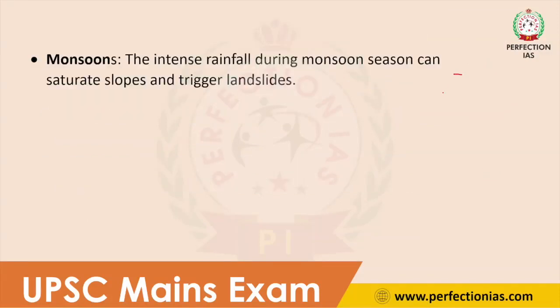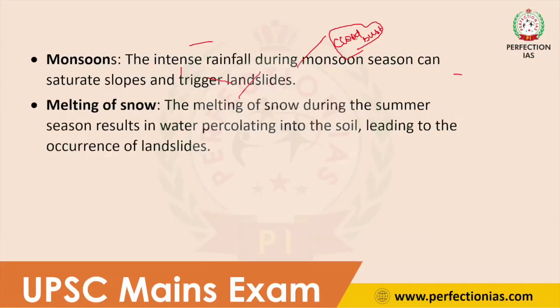The next cause is monsoon. The intense rainfall during monsoon season can saturate slopes. During monsoon, cloudbursts happen in the Himalayan region, leading to heavy downpour. This downpour saturates slopes and triggers landslides. Monsoon is therefore one of the major factors for landslides in the Himalayan region.